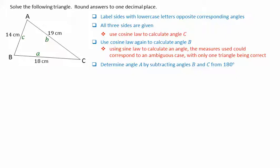We can then determine angle A, the third angle, by subtraction of angles B and C from 180 degrees.